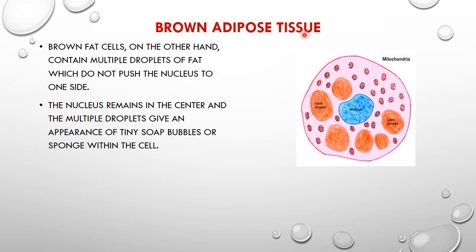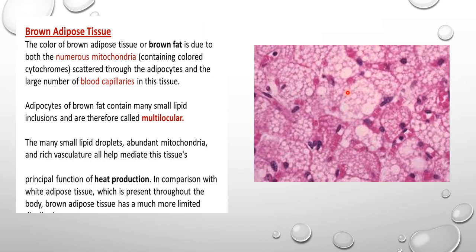Another variety is the brown adipose tissue, also called multilocular adipose tissue. This type of adipocyte has multiple small droplets of lipids dispersed throughout the cell, a lot of mitochondria, and the nucleus is central in position. These multiple droplets of fat give an appearance of soap bubbles or a sponge within the cell. In the photomicrograph of brown adipose tissue, you can see the small lipid droplets filling the adipocytes. It is rich in mitochondria and rich in blood supply, which gives it its brown appearance.